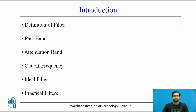A filter is an electrical circuit which can transfer a signal from a particular frequency band and it will attenuate frequency signals except that pass band. Frequency signals which are to be passed through the filter circuit are called the pass band, and frequency signals which are to be suppressed are called the attenuation band. The frequency which distinguishes pass band and attenuation band is called the cutoff frequency.